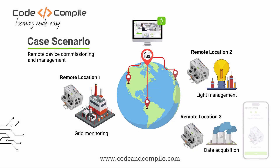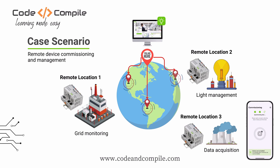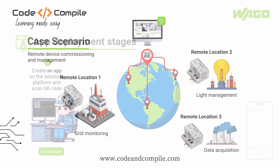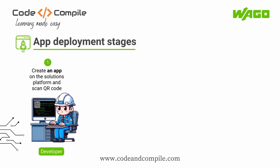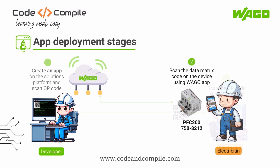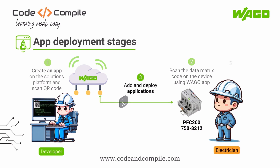To address this challenge, let me introduce WAGO's solutions platform. Using this platform, shop floor electricians can deploy applications to the controller within a few minutes using their mobile phones, without writing a single piece of code. It can be done in three simple steps. Step one involves creating an app on the solutions platform and generating a unique QR code — this is generally done by the developers. The developers send this QR code to the electrician, who logs in to the WAGO app and scans it. Then the electrician scans the data matrix code on the PFC 200 controller, connecting it to the solutions platform. Lastly, the developer deploys the app remotely. That's it.